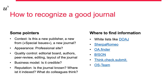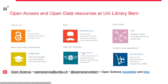The first is the OA Finder — with it you can check funding possibilities at the University of Bern for a journal you want to publish in. The second is Bison, where you can find a gold or diamond open access journal that matches the content of your manuscript. If you still have doubts about the journal, you can always contact us. The information about our services and contact details can be found on this slide or at our website.